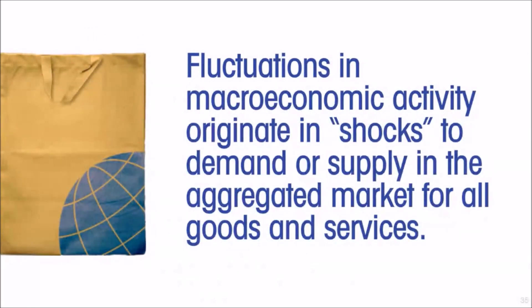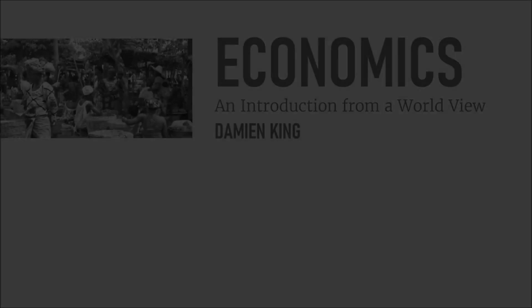This is how fluctuations in an economy's GDP from year to year come about. Fluctuations in macroeconomic activity originate in shocks to demand or supply in the aggregated market for all goods and services.